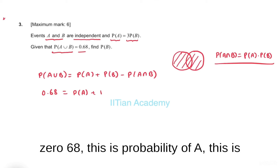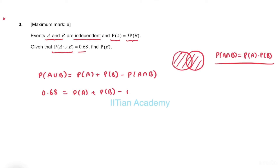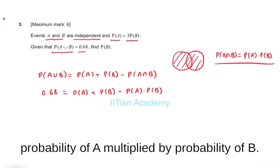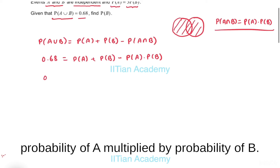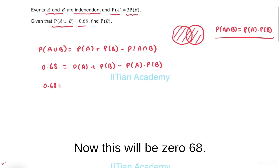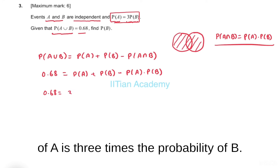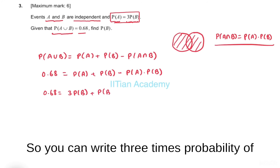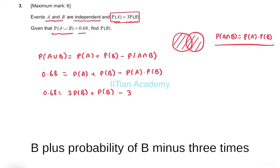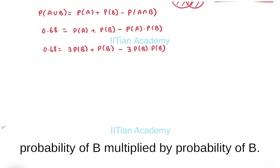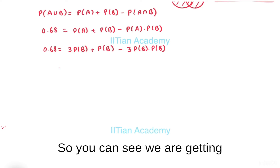So P(A union B) is given as 0.68, which equals P(A) plus P(B) minus P(A)·P(B). Since P(A) = 3·P(B), we substitute: three times P(B) plus P(B) minus three times P(B) multiplied by P(B) equals 0.68.